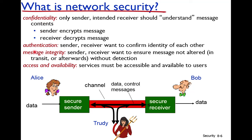The second parameter defining network security is authentication. Authentication means that when sender and receiver are communicating, they both want to confirm each other's identity. When Alice is sending a message to Bob, Bob wants to confirm the message is coming from Alice, not someone else. Similarly, Alice wants to confirm the message will only be received by Bob.